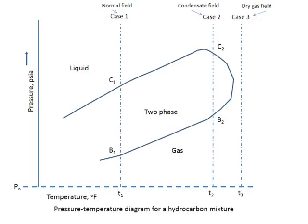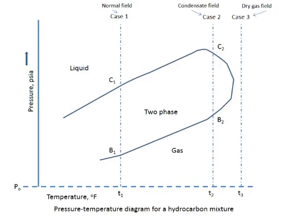The problem this can bring about is that liquids forming a saturation less than the critical will not move. In order to prevent the loss of condensates in a reservoir, the pressure in a number of condensate fields is maintained at or close to the initial pressure by recycling — that is, re-injecting dry gases into the formation after surface processing. In case number three, we see that no liquid phase is formed no matter how high the pressure is raised, so that a field containing a hydrocarbon mixture operating on this line would produce dry gas without any condensate problems. Such behavior typifies a dry gas field.